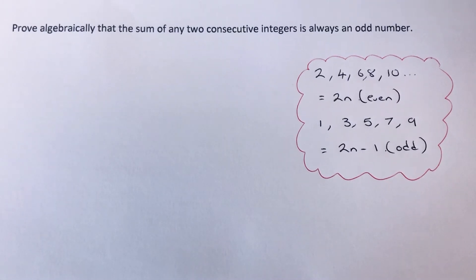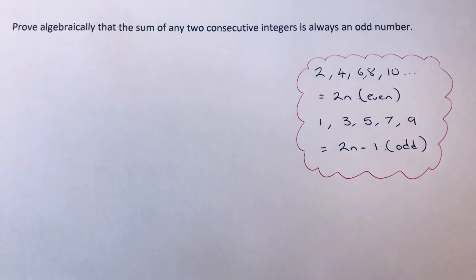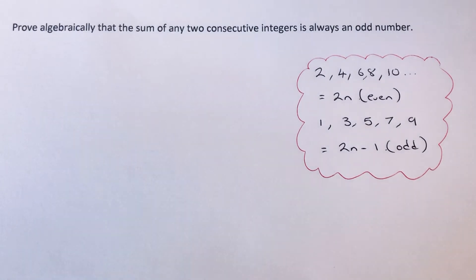Hi guys, welcome back, this is Maths3000. Today we're going to prove algebraically that the sum of any two consecutive integers is always an odd number.